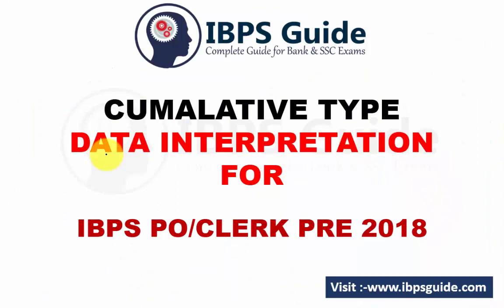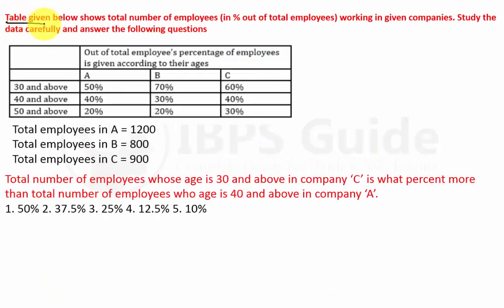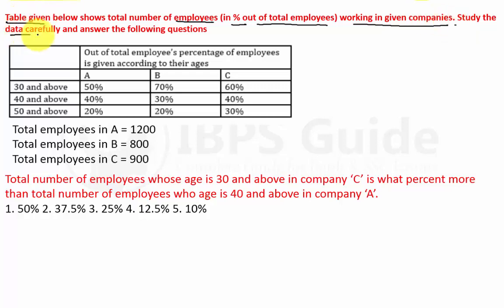Hello everyone, welcome to IBPS Guide. In this particular video, we will see one cumulative-type data interpretation question, which is very important for your IBPS PO Clerk Prelim 2018. Without further ado, let's move toward our data interpretation first question. The table given below shows the total number of employees as a percentage out of total employees working in a given company — study the data carefully and answer the following questions.